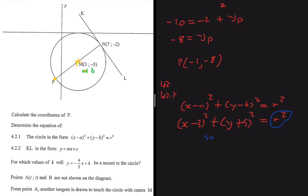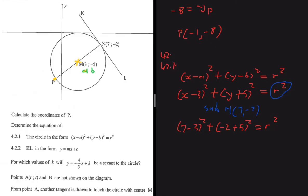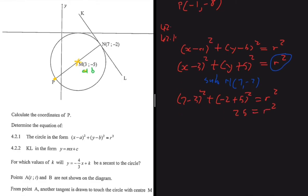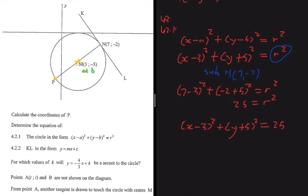Substituting point N with coordinates (7, minus 2) into the equation: (7 minus 3) squared plus (minus 2 plus 5) squared equals r squared. That gives 4 squared plus 3 squared, so 16 plus 9 equals 25. Therefore r squared equals 25, and the equation of the circle is (x minus 3) squared plus (y plus 5) squared equals 25.